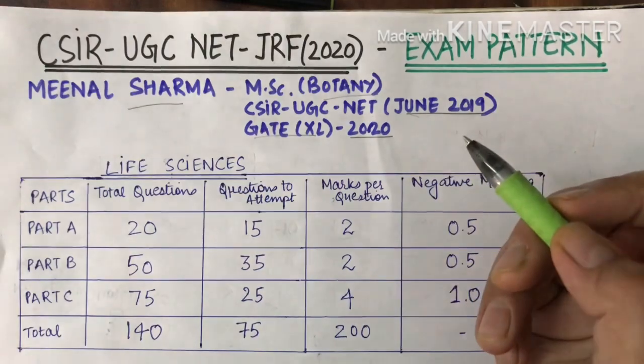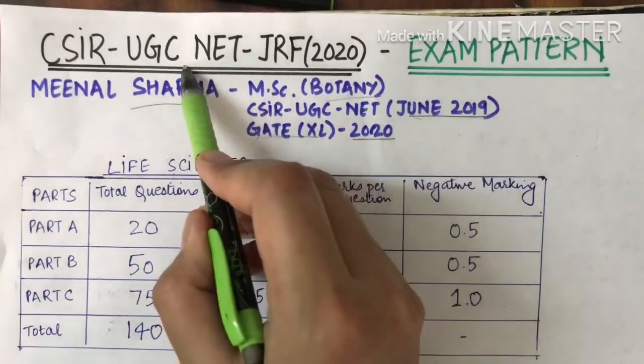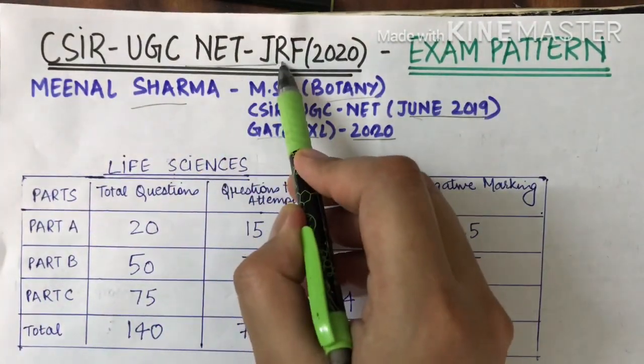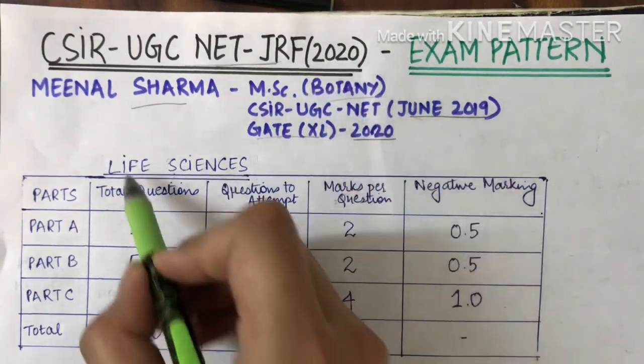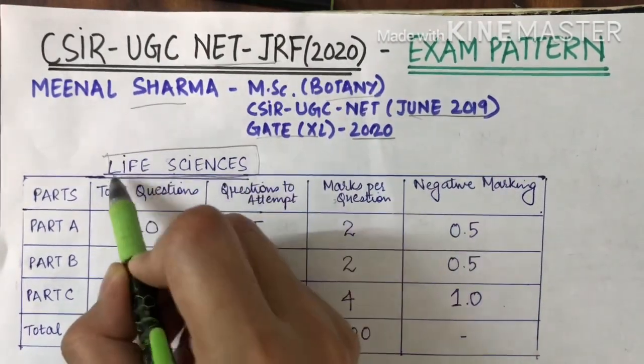This is our channel. We will target CSIR UGC NET JRF 2020 in the stream of Life Sciences.